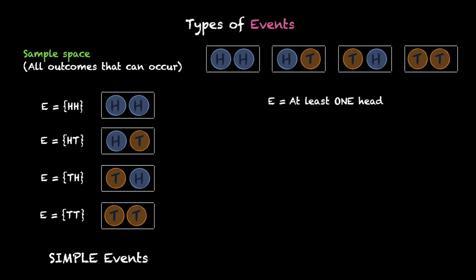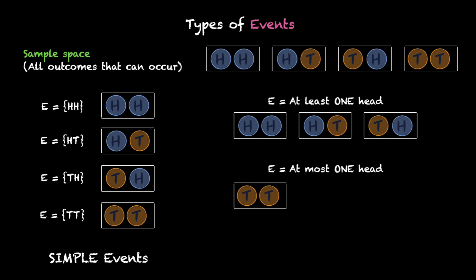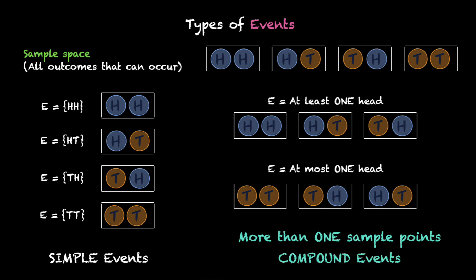Let's look at a few more. We have an event which says at least one head. Now to get at least one head, we need either both heads, the first one head, or the second one head. Another example: at most one head. For at most one head, we need either two tails, or the first one tail and the second one head, or the first one head and the second one tail. These examples have more than one sample point — three sample points each. When you have more than one sample point, you're looking at compound events.